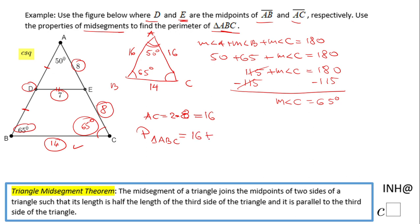And we have this 14 here, so now we can find the perimeter of triangle ABC. That is AB, which is 16, plus AC, which is also 16, plus BC, which is 14. If we add these three sides, we get 46. The perimeter of triangle ABC is 46 centimeters.